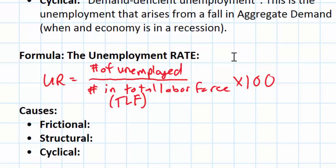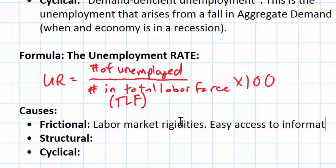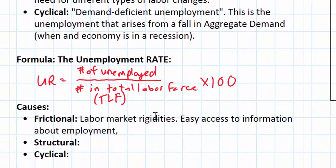Before we do our graphical analysis, let's talk about some of the causes of frictional, structural, and cyclical unemployment. Frictional unemployment exists when people are in between jobs or when people are leaving school and looking for their first jobs. So why might the level of frictional unemployment be higher in some countries than in others? Well, this really has to do with labor market rigidities. How hard is it for people who are looking for new jobs to find new jobs? If there is easy access to information about employment, then frictional unemployment should be lower.